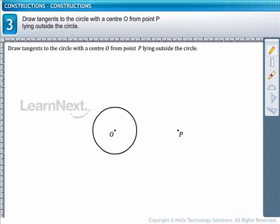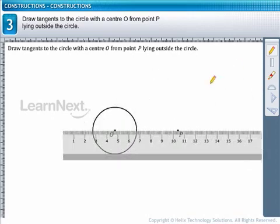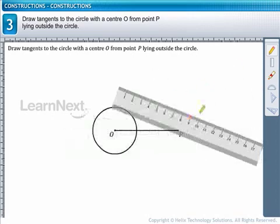Let us start with the construction. As step 1, join the external point P with the center of the circle O.